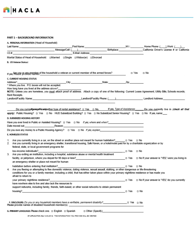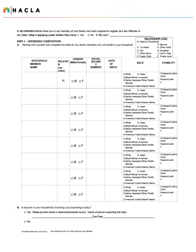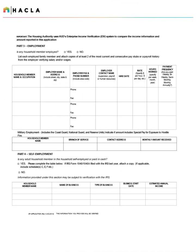Part 1 of the core application collects personal information as well as details on current housing status, subsidized housing history, homelessness status, disability, and primary language. It continues to collect information on sex offender status as well as household composition. Sections 3 and 4 request details on employment and self-employment. Each section will identify the supporting documents to provide for each applicable item.